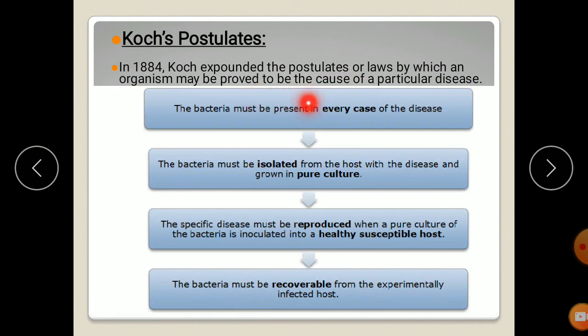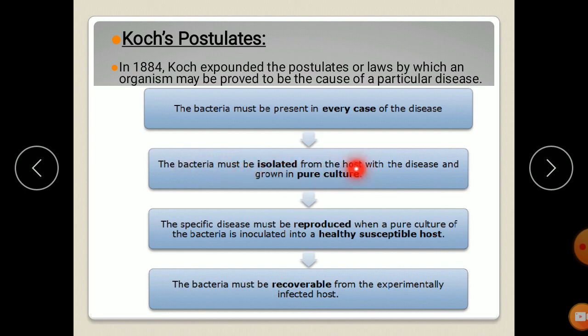These are the four criteria of Koch's postulates. The first criteria is the bacteria must be present in all the diseased animals. The second criteria is the bacteria present in the diseased animals must be isolated and grown in pure culture.